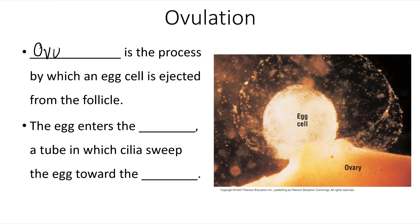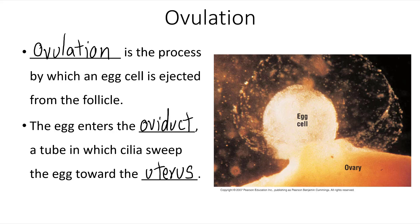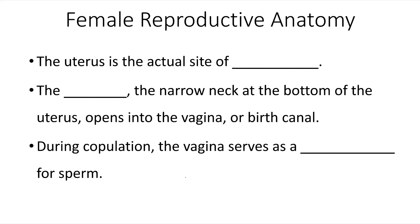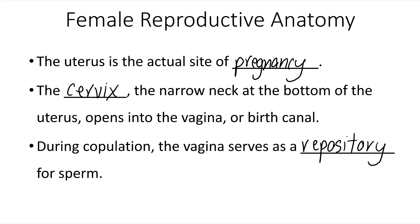Ovulation is the process by which an egg cell is ejected from the follicle. The egg enters the oviduct, a tube in which cilia sweep the egg towards the uterus. The uterus is the actual site of pregnancy. The cervix is the narrow neck at the bottom of the uterus and it opens into the vagina or birth canal. During copulation, the vagina serves as a repository for sperm. These are the structures of the female reproductive system.